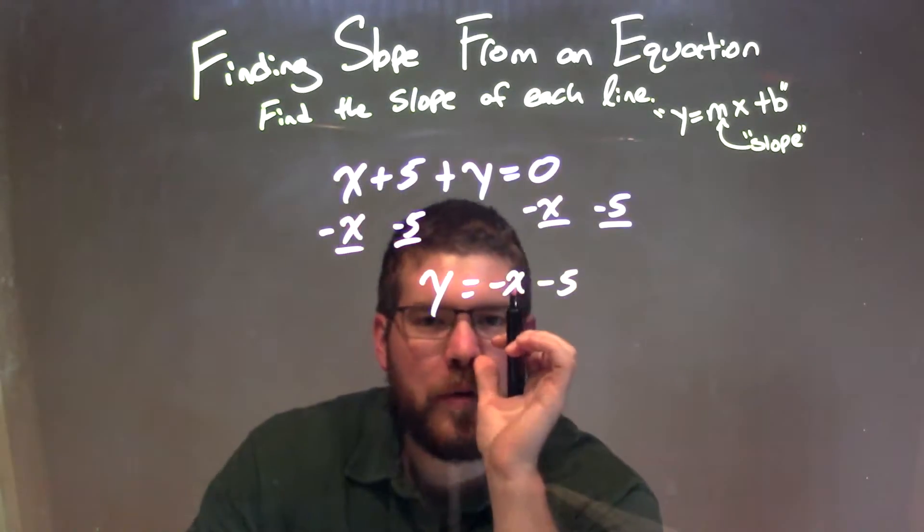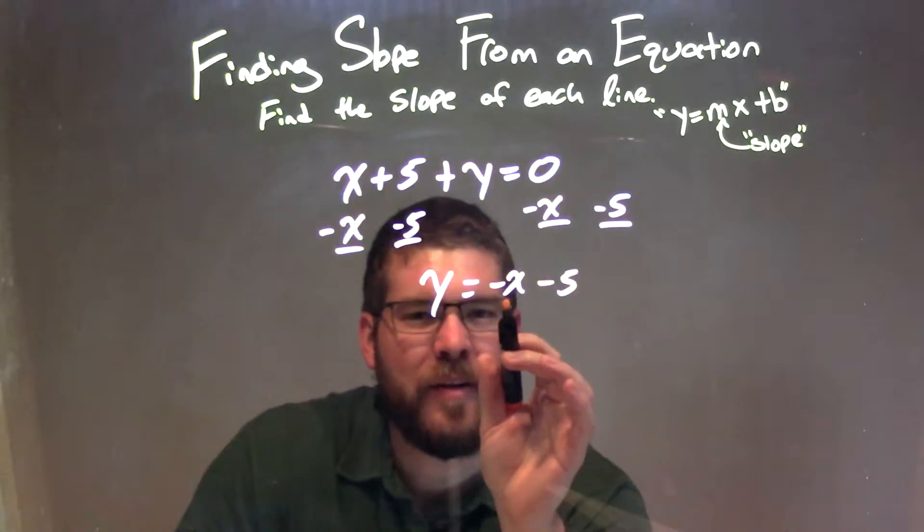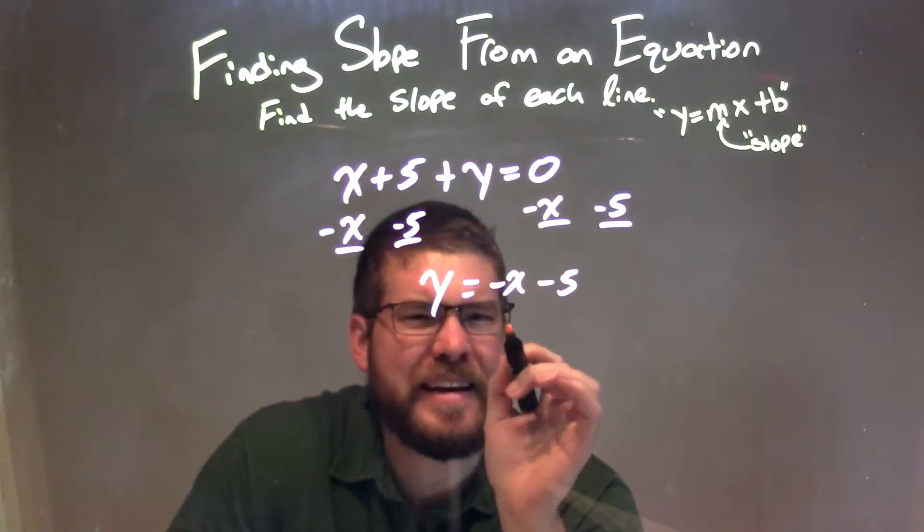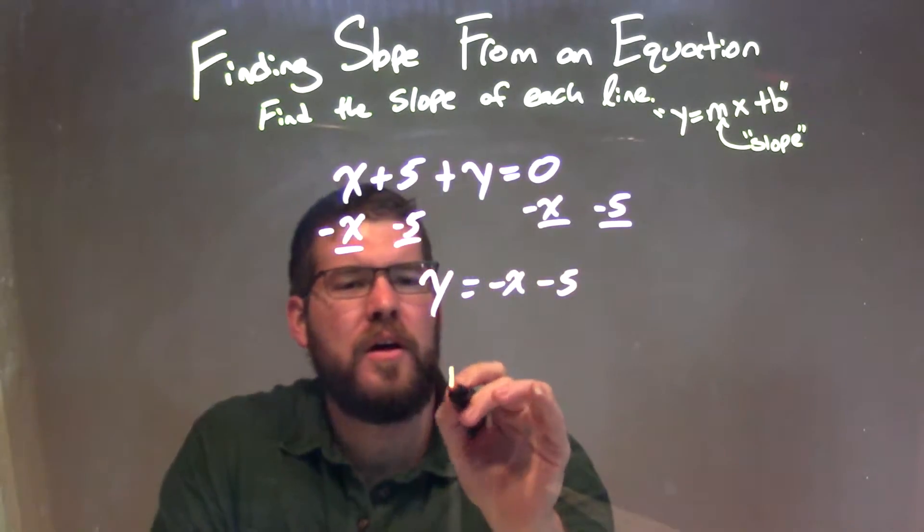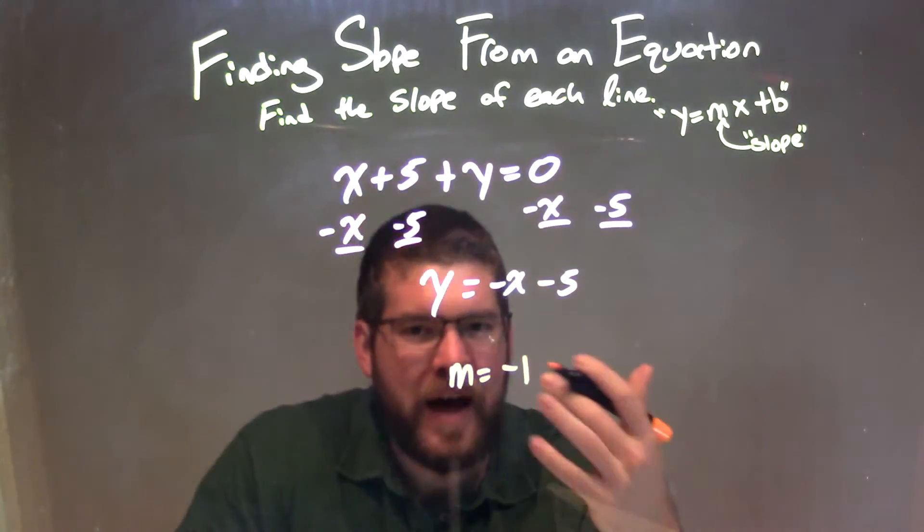Our m value is a coefficient for x, and we didn't see a negative out there, but we've seen this before. That negative is really a negative 1, that coefficient. So our slope here is a negative 1, not a negative x.